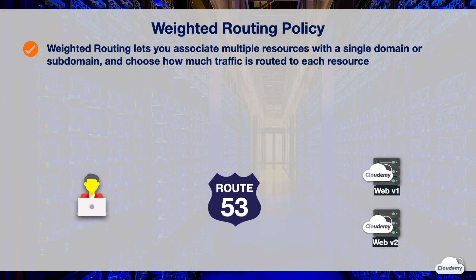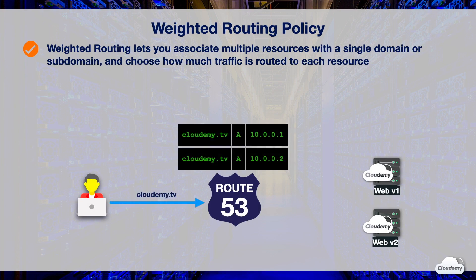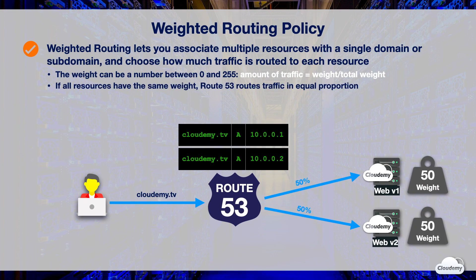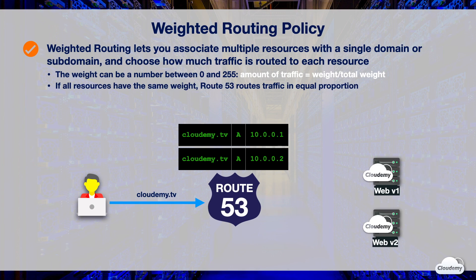Weighted routing lets you associate multiple resources with a single domain or subdomain, and choose how much traffic is routed to each resource. When you choose weighted routing, you can create records that have the same name and DNS record type for each of your resources. You assign each record a relative weight that corresponds with how much traffic you want to send to each resource. You can set the weight to a value between 0 and 255. Route 53 sends traffic to a resource based on the weight of the record as a proportion of the total weight for all records. If all resources have the same weight, Route 53 routes traffic in equal proportion, allowing you to use Route 53 for load balancing. Another common use case of weighted routing is for testing new versions of software, such as Canary Release and Blue-Green Deployment.